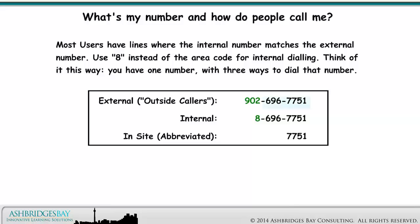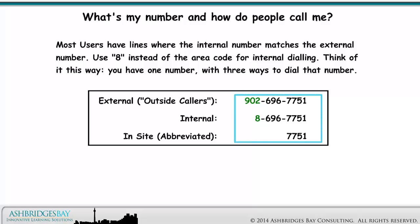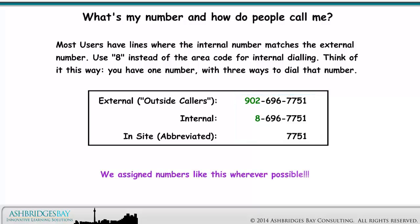Most users have lines where the internal number matches the external number. Use 8 instead of the area code for internal dialing. Think of it this way: you have one number with three ways to dial that number. We assigned numbers like this wherever possible.